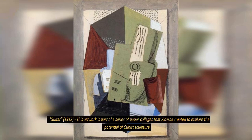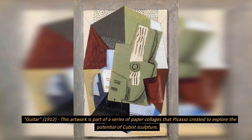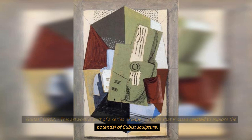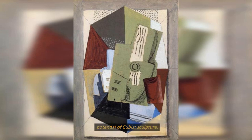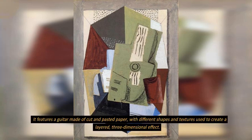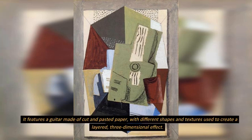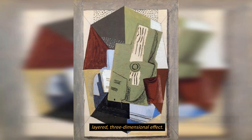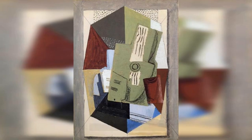Guitar, 1912. This artwork is part of a series of paper collages that Picasso created to explore the potential of cubist sculpture. It features a guitar made of cut and pasted paper, with different shapes and textures used to create a layered, three-dimensional effect.